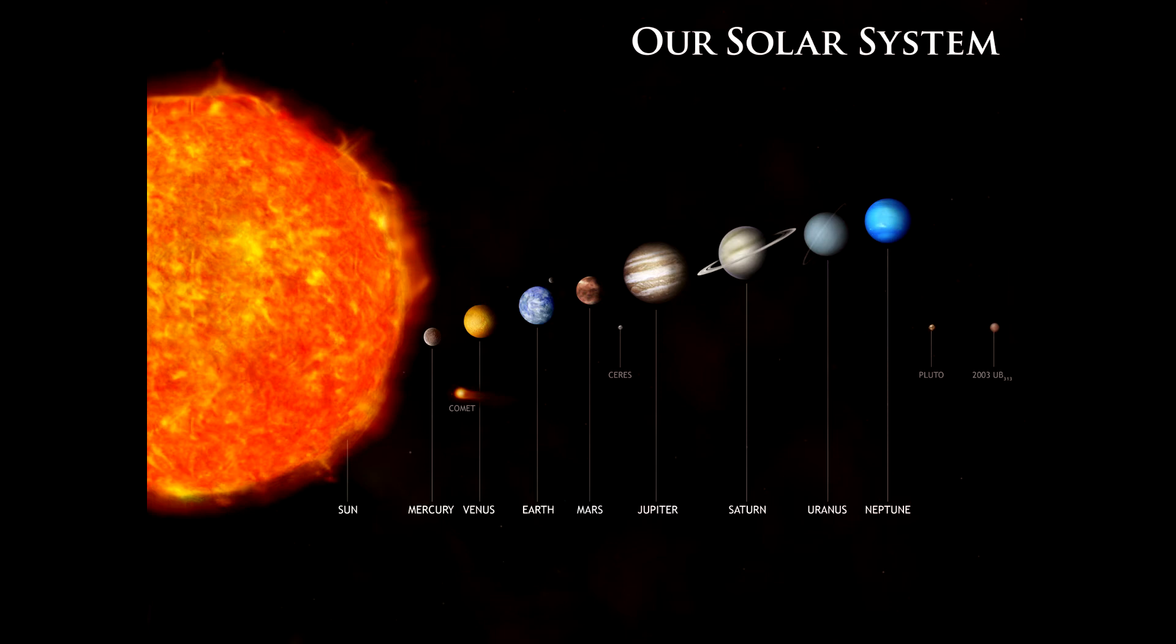Jupiter, Saturn, Uranus. The furthest planet from sun is Neptune. To be fair, Pluto was counted as a planet till 2006, when International Astronomical Union excluded Pluto.